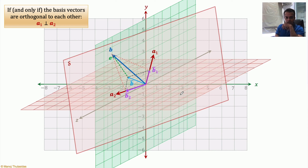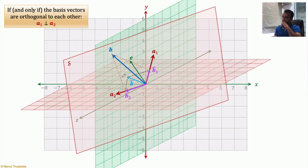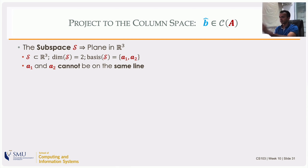The error vector e — from the tip of b-hat to the tip of b — is perpendicular to a1 and a2, because you projected and then subtracted. This is exactly what we did in Gram-Schmidt: you project the existing vector onto the already normalized columns q1 and q2, subtract it away to get the error vector, and that error vector is perpendicular to q1 and q2. So e is orthogonal to the plane S, meaning orthogonal to each basis vector. Note that a1 is not a scalar multiple of a2, as required for basis vectors.